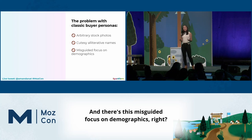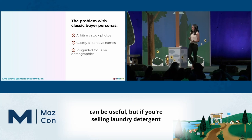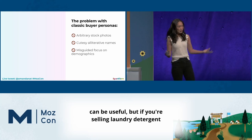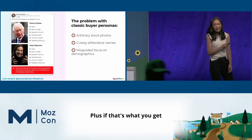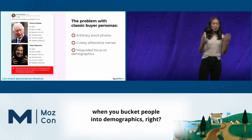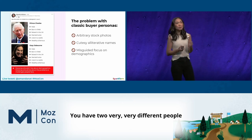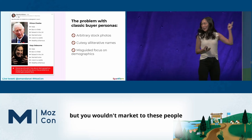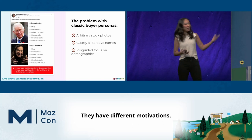And there's this misguided focus on demographics. Certainly there are some cases where demographics can be useful, but if you're selling laundry detergent or software, a lot of this doesn't really matter. When you bucket people into demographics, you can get two very different people with the same demographics who you wouldn't market to in the same way — they have different challenges and different motivations.